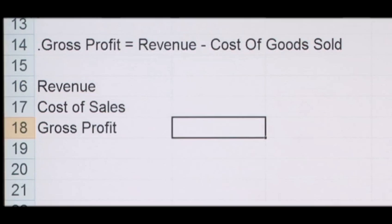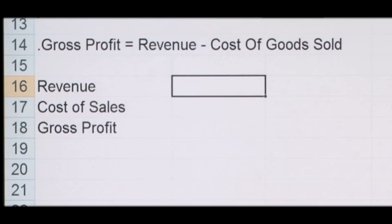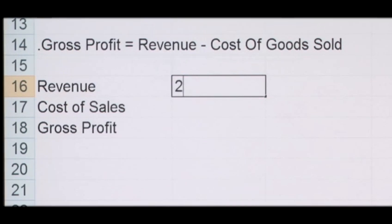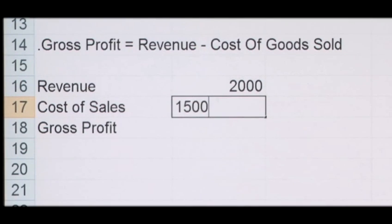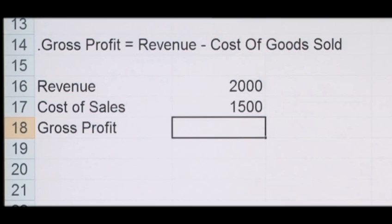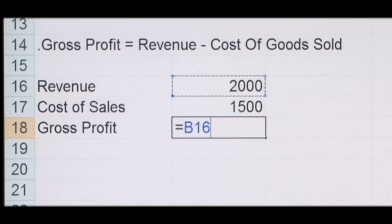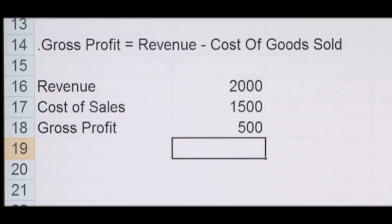For example, if we look at the company here, they've generated a revenue of two thousand pounds in the year. The cost of sales associated with this was fifteen hundred pounds. The gross profit was therefore two thousand minus fifteen hundred to give you five hundred pounds gross profit.